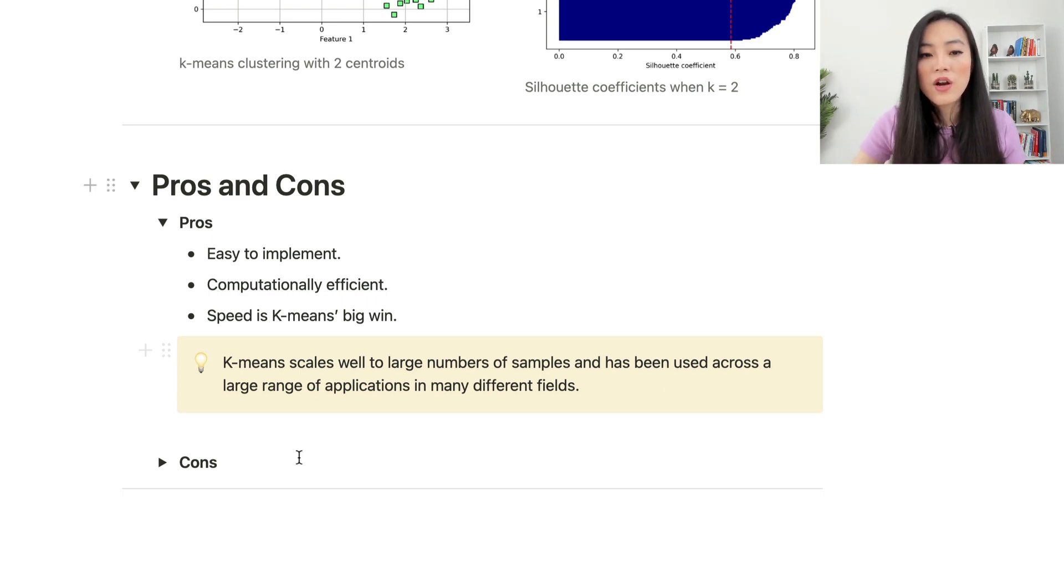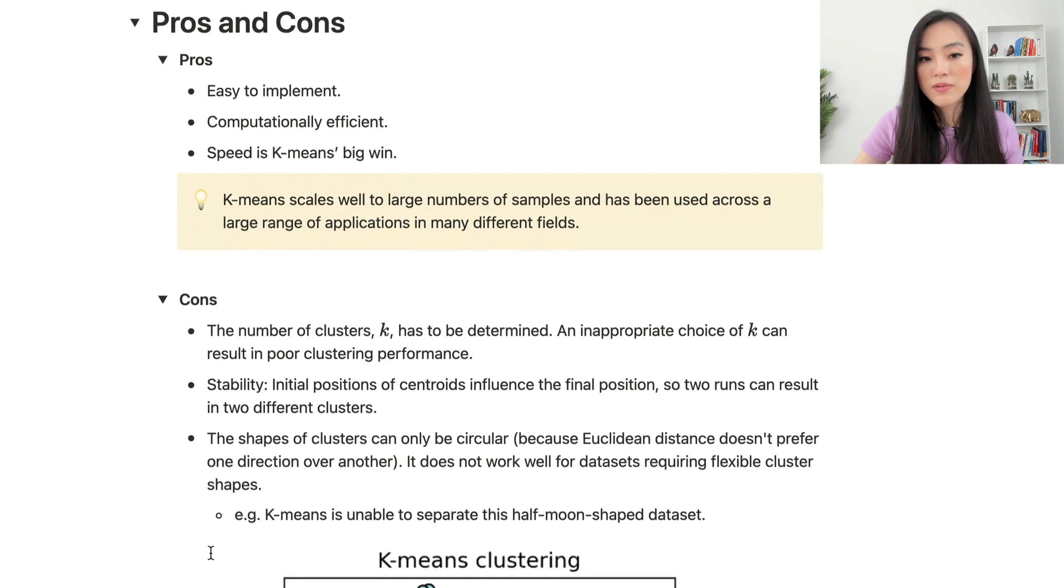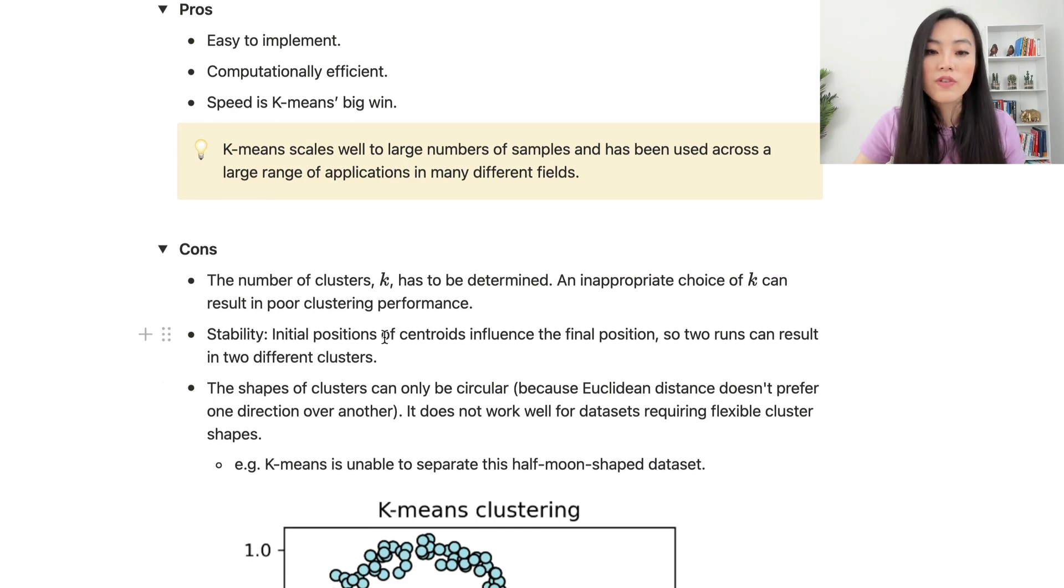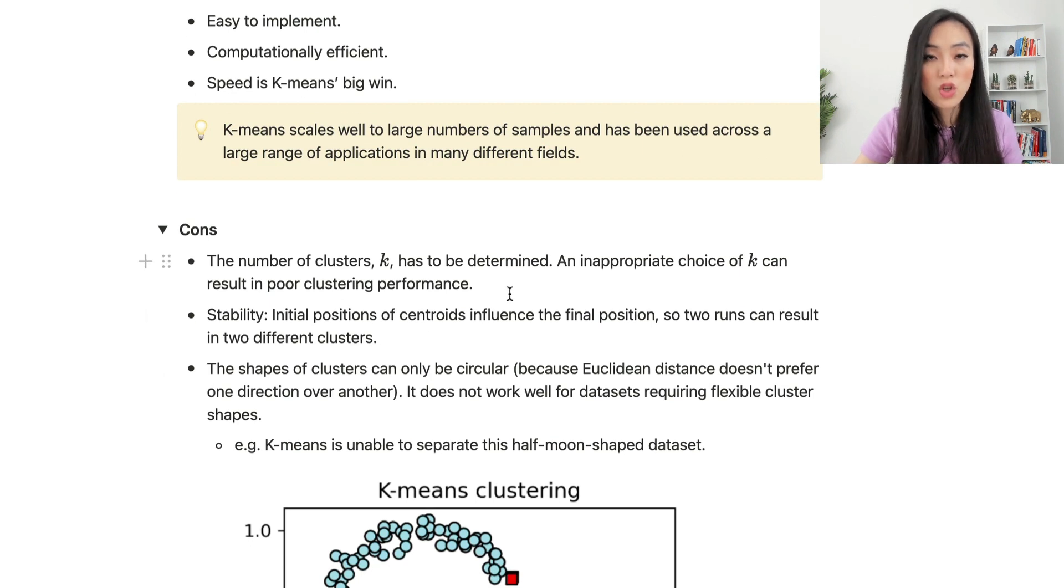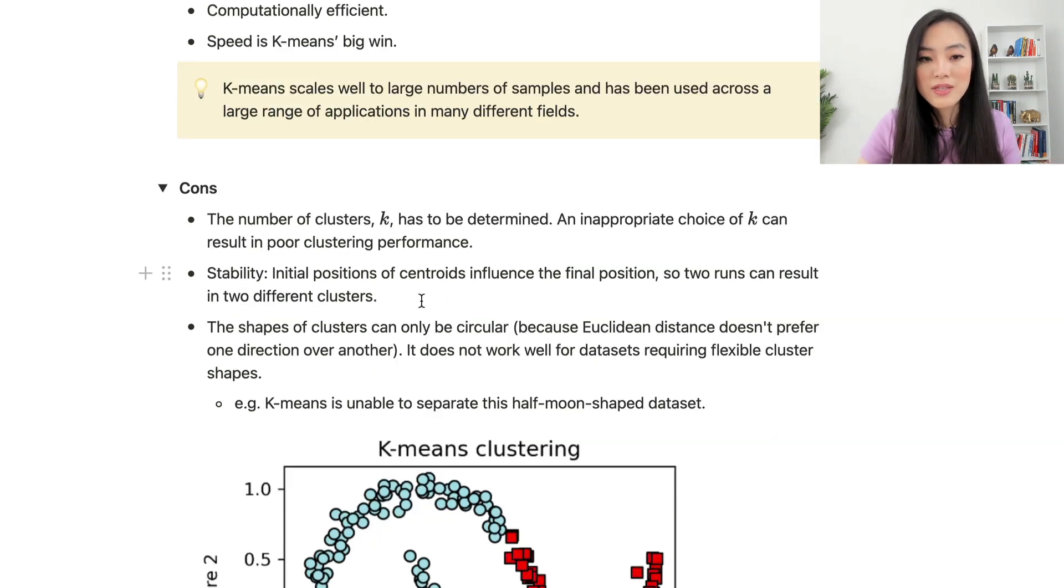There are also some downsides of K-means algorithm. First of all, the number of clusters K has to be determined. As we have seen in the previous example, an inappropriate choice of K can result in poor clustering performance. Another downside of K-means is its instability. The initial positions of centroids influence the final positions, so two rounds of K-means algorithm can result in two different clusters.